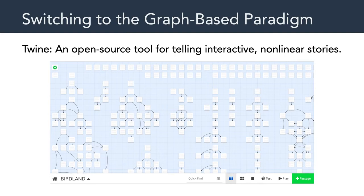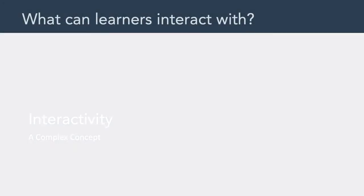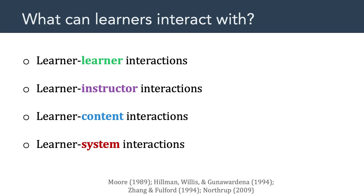Let's move on to talk a little bit more about interactivity. In this next section, I want to talk about interactivity, which, as we read about this week, is a rather complex concept. One of the things that might be helpful is to think about what learners can interact with. Early research in the late 80s and early 90s focused on four main distinctions: learner-to-learner interactions, learner-instructor interactions, learner-content interactions, and learner-system interactions.